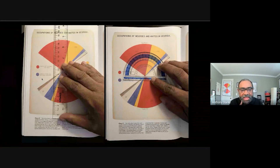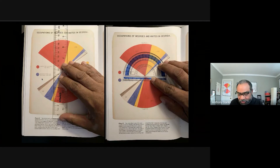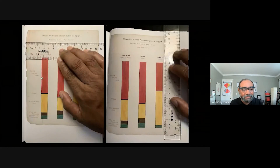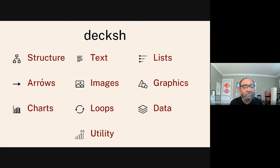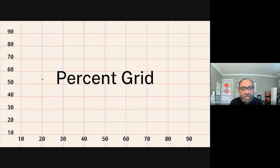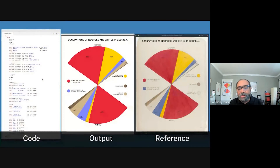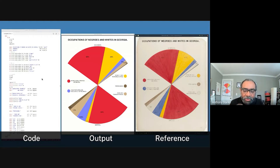In recreating the visualizations, I had to go analog — here you can see me measuring things to make sure I got the angles and proportions just right. These visualizations were created using a tool called Deckshell, which is a domain-specific language I created in the Go programming language. The presentation you're looking at now is itself created in Deckshell. It works by placing objects on a percent grid. There's the code on the left, the output in the middle, and the reference on the right — so I can make tweaks, hit a button, see the generated output, and compare it to the reference.